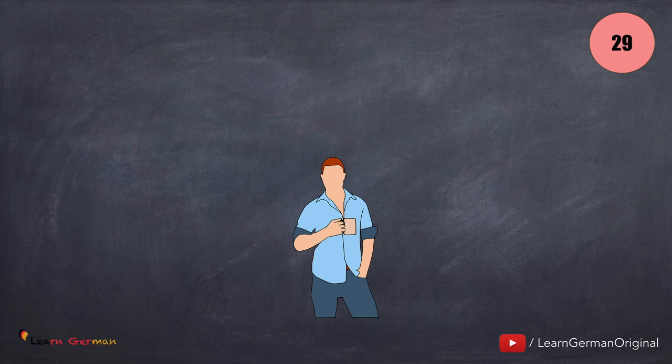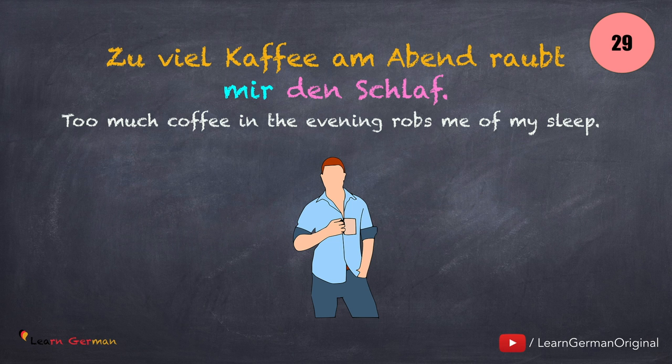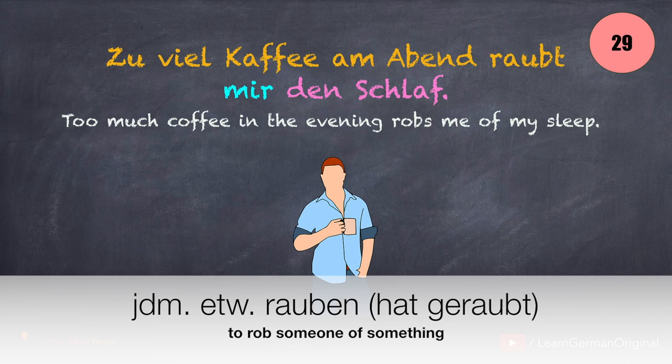And here is the next one: Zu viel Kaffee am Abend raubt mir den Schlaf. The verb here is rauben. Jemandem etwas rauben.